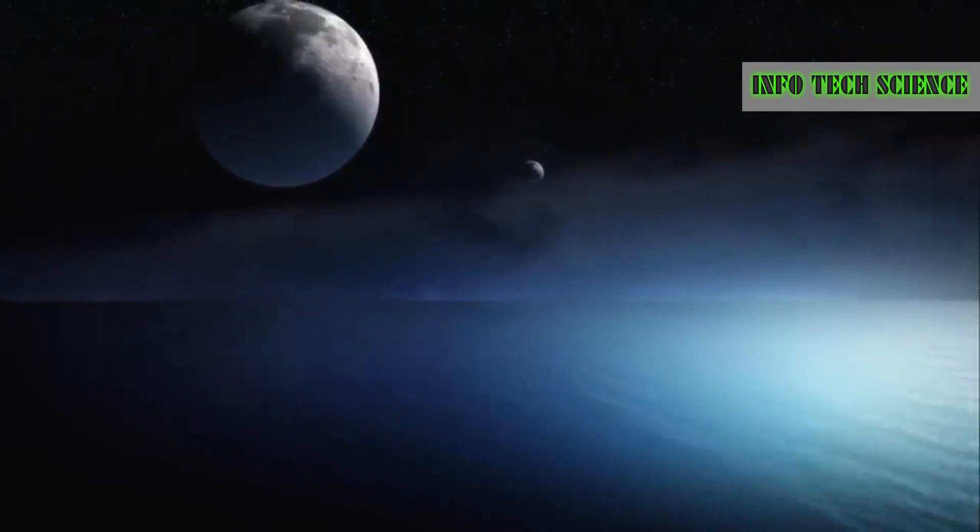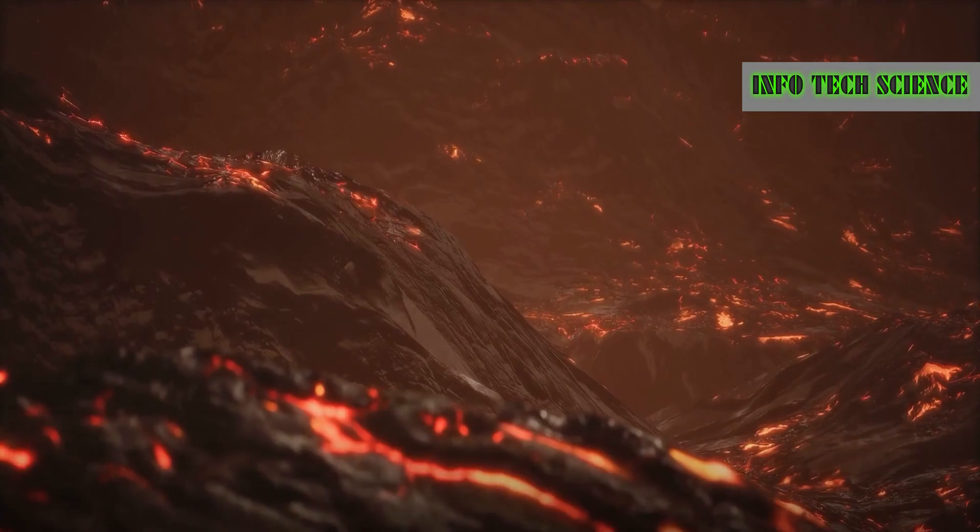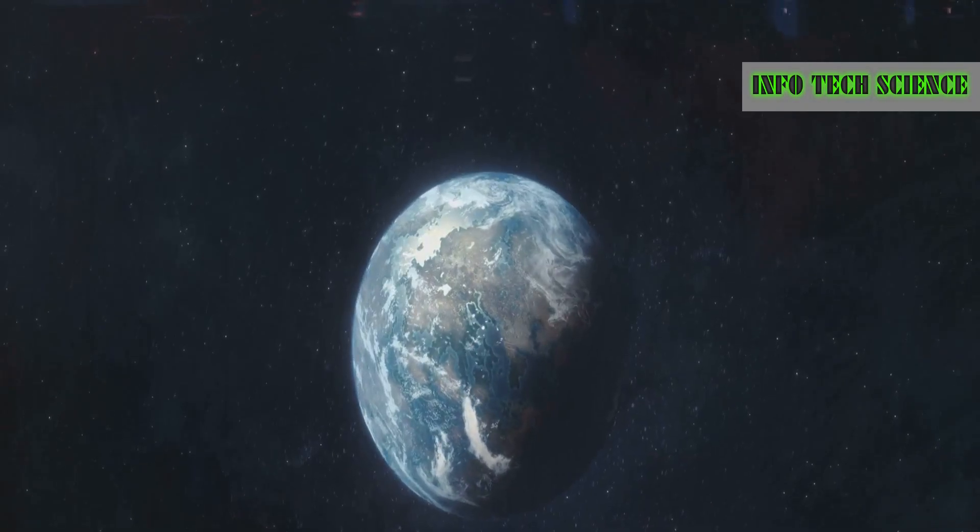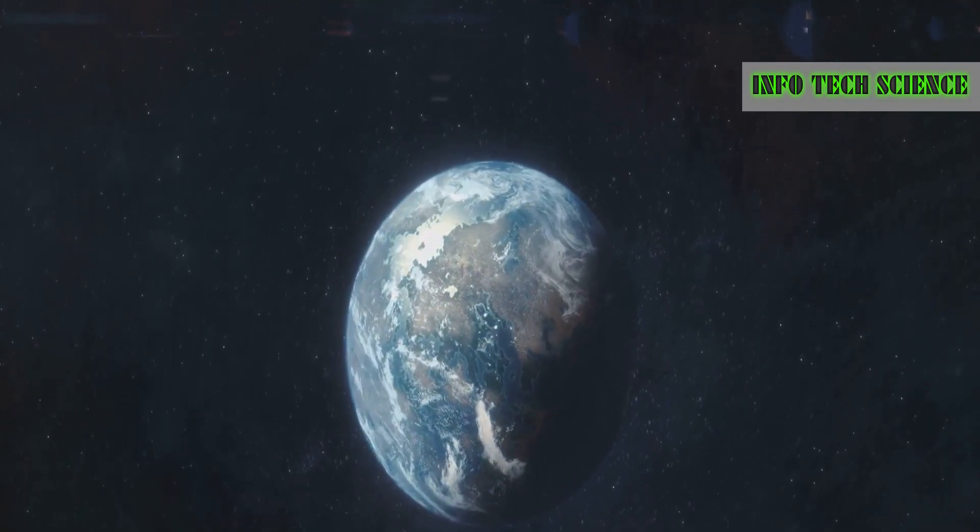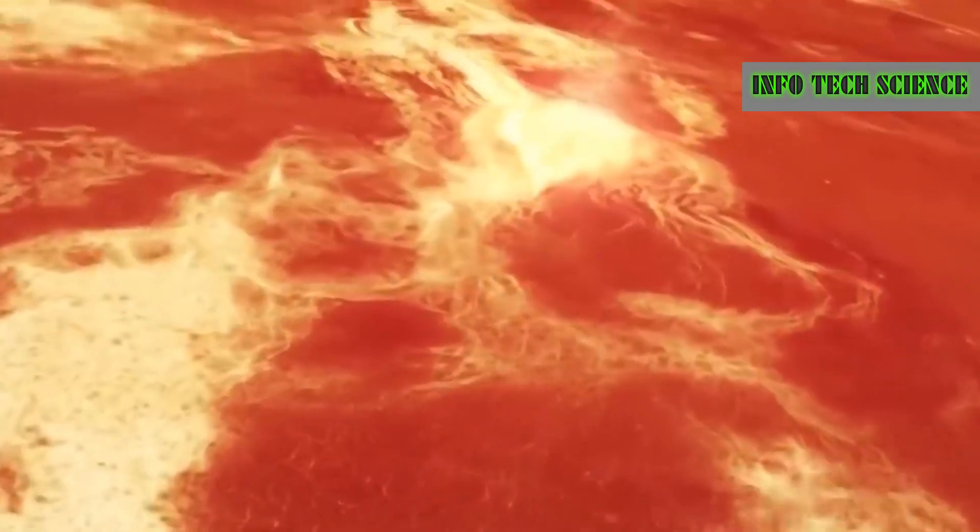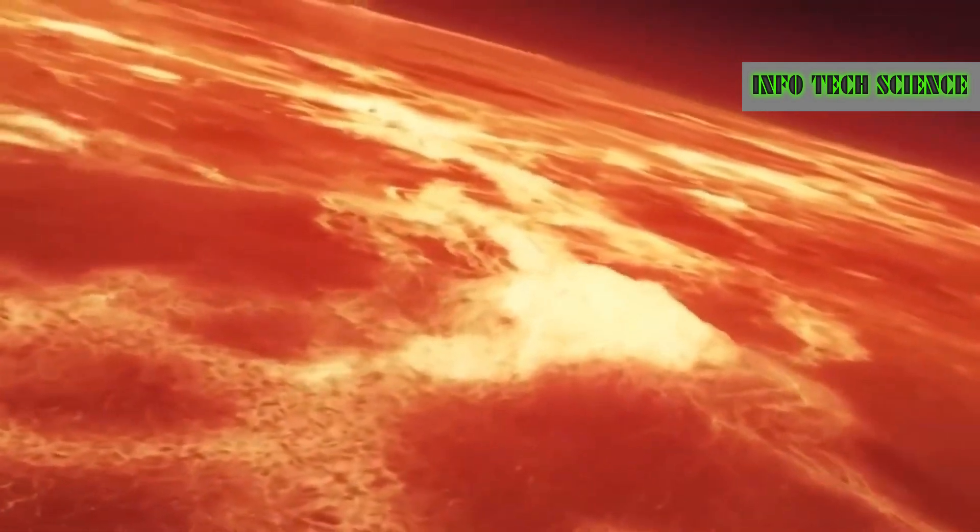Lastly, we have Kepler-10b, almost entirely covered by oceans, but these aren't oceans of water - they're oceans of lava. This planet is so close to its host star that its surface temperature can reach 1,500 degrees Celsius, turning it into a scorching ocean of molten rock.